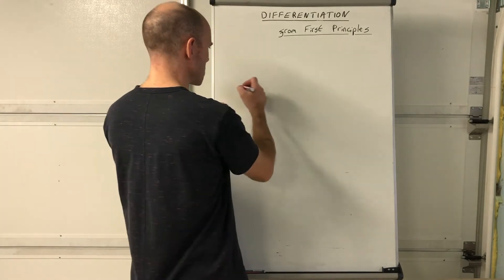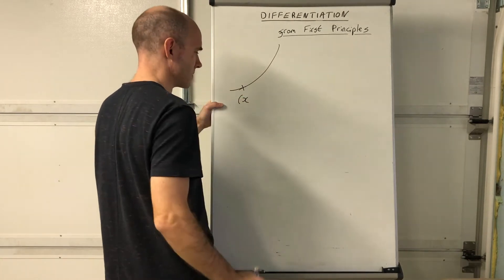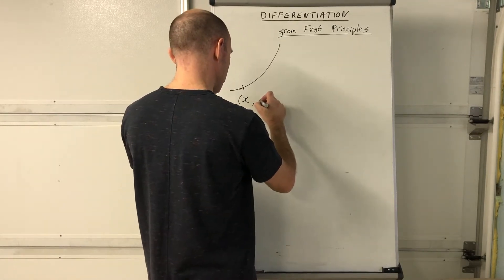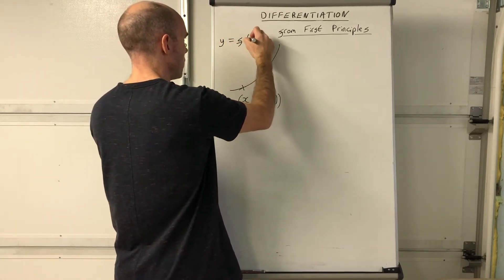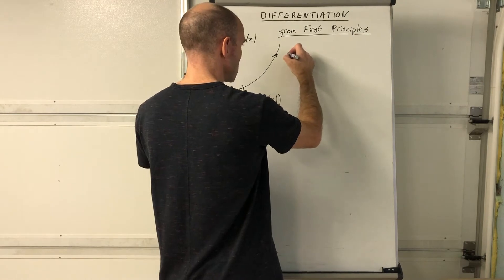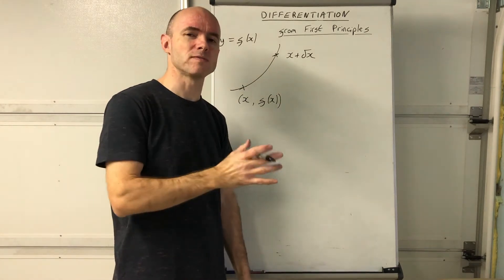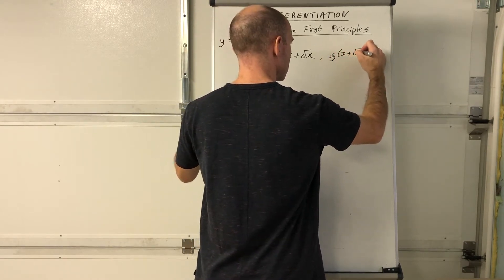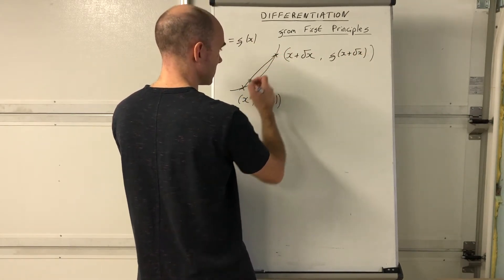So how does first principles work? We look at one particular point with x-coordinate x, and its y-coordinate is f(x). I'm using the x, f(x) notation for the graph y = f(x). Then I look at a point close to it - a point close in x-coordinate is x plus delta x, where delta x means a small change in x value. The y-coordinate of that point will be f(x + delta x).